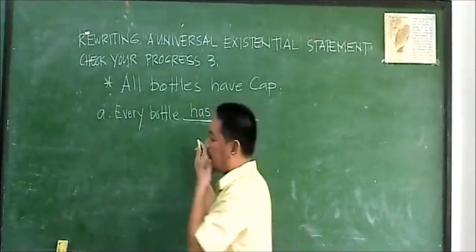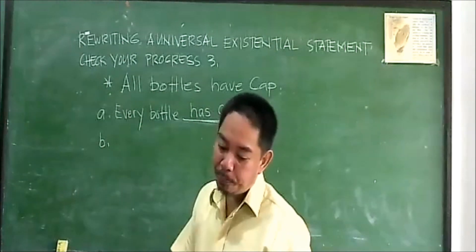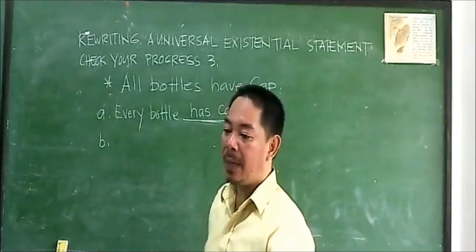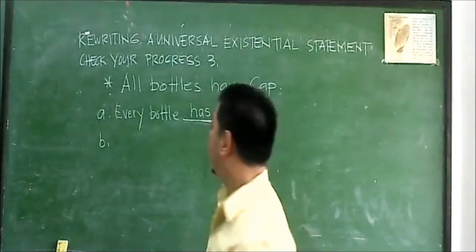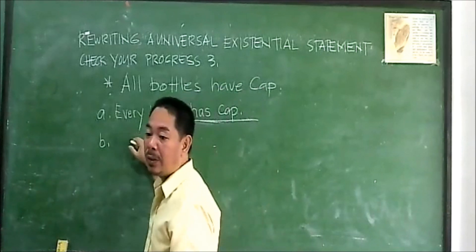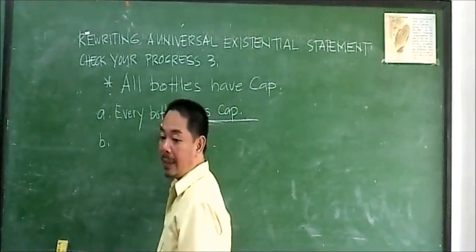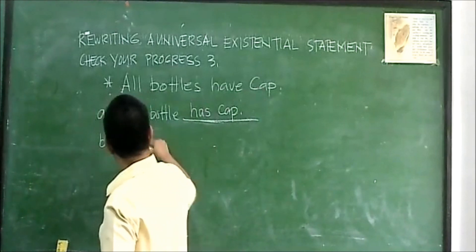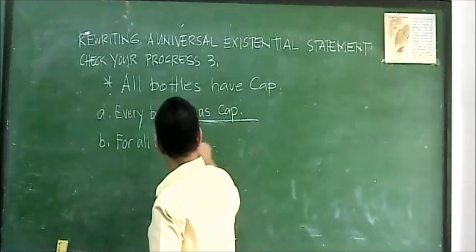For all bottles, the variable B denotes a bottle. So for all bottles B, there are cups.